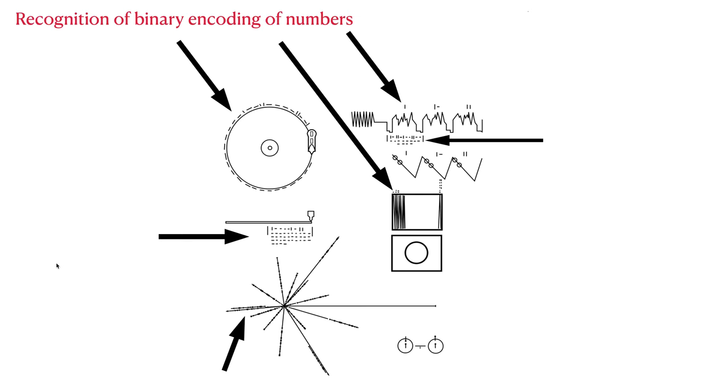In almost all of the images shown here, there are binary numbers. So, the dashes and vertical bars represent ones and zeros, a binary encoding of various numbers, including the speed at which the record needs to be turned, and so on.